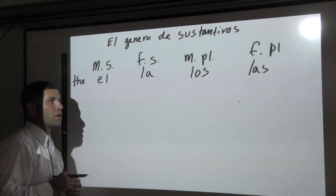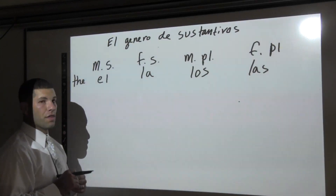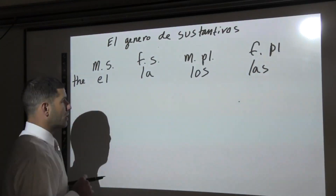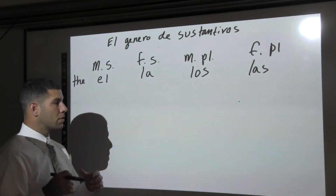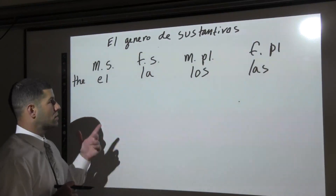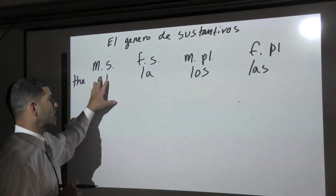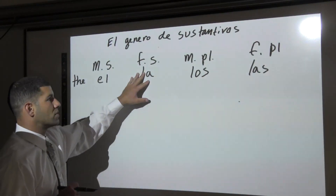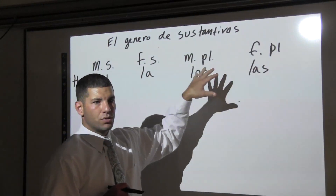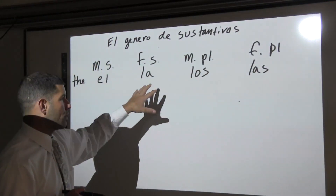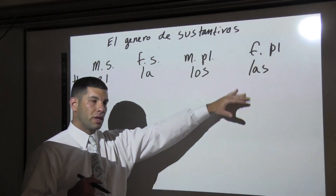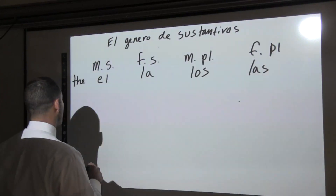First of all, we have the definite article — 'the.' There's only one of them in English, but in Spanish we have el, la, los, las — masculine singular, feminine singular, masculine plural, and feminine plural. We'll use those to help identify what gender something is in the first place.